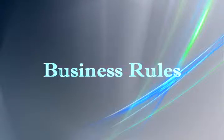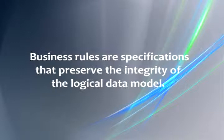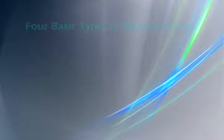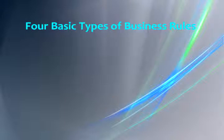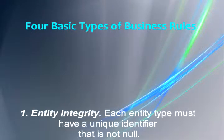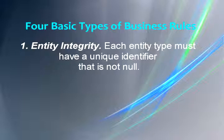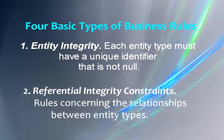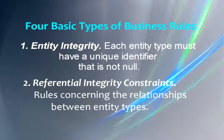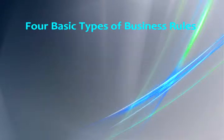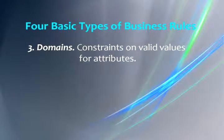We have mentioned business rules. Business rules are specifications that preserve the integrity of the logical data model. There are four basic types of business rules: entity integrity, which means that each entity type must have a unique identifier that is not null; referential integrity constraints, which are rules concerning the relationships between entity types; domains, which are constraints on valid values for attributes.